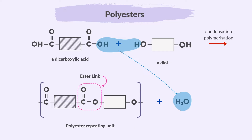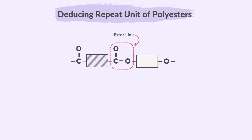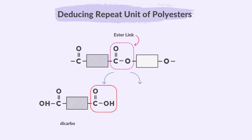We learned how to deduce the repeat unit of a condensation polymer from a dicarboxylic acid and a diol to a polyester. For the reverse process — that is, polyester to monomers — we identify the ester linkages in the polymer, then break the ester linkages to obtain the original dicarboxylic acid and diol monomers.